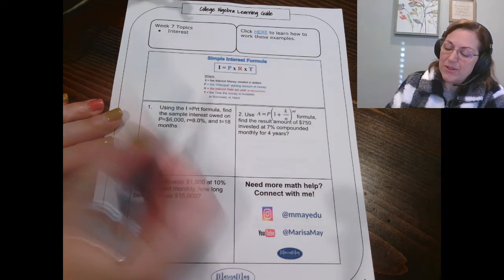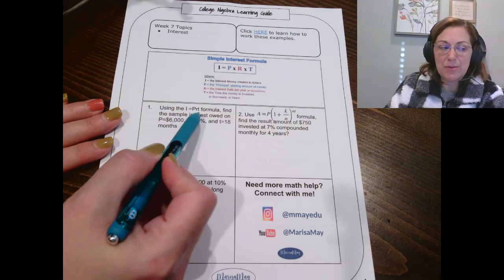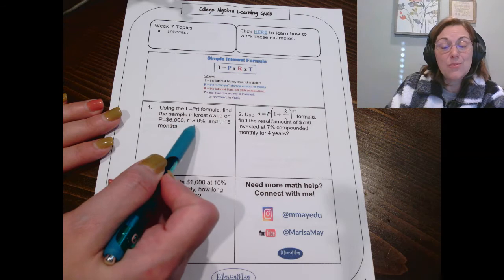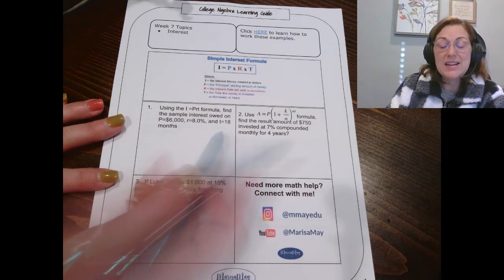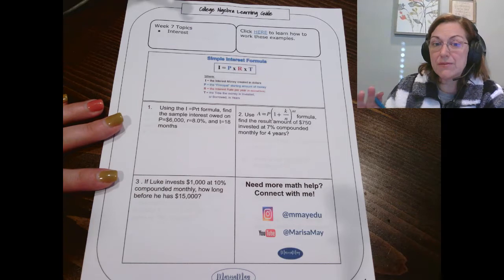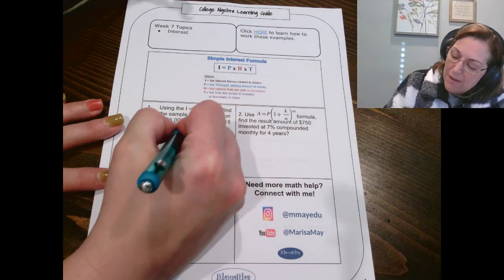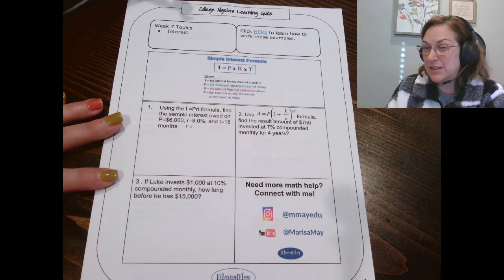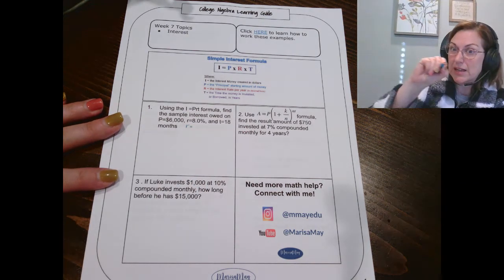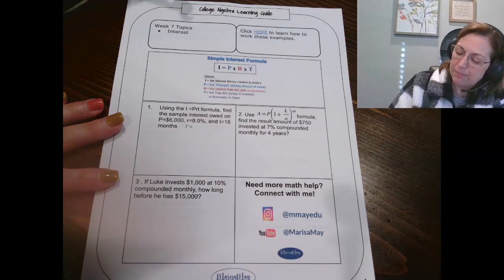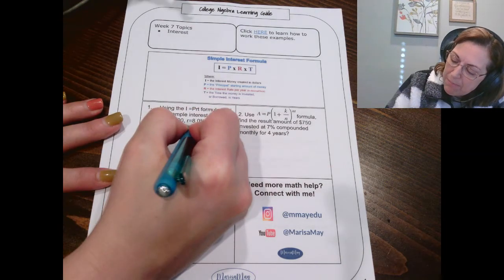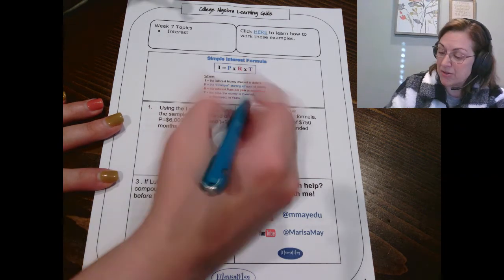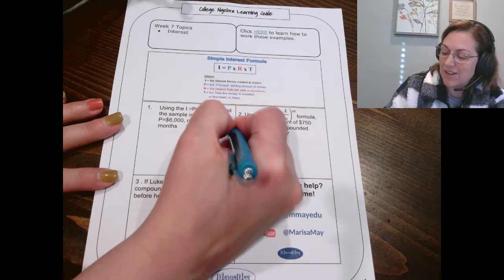So let's look at number one. We're asked to use the simple interest formula to find the sample interest for $6,000, a rate of 8%, and a t equaling 18 months. Now just a couple of conversions we need to make first. My rate needs to be a decimal and while 8.0 looks like a decimal but it's still a percent. So if you remember we're going to move our decimal two places to the left so that would be 0.08 and then my time factor here has to be in years. So instead of 18 months I'm going to use 1.5 years.